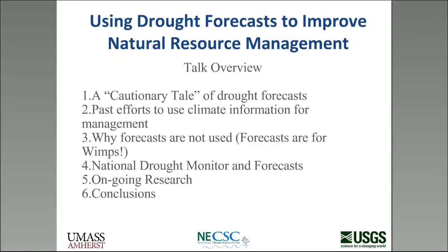Here's an overview of the remainder of my talk. I'm going to present a series of papers — some pretty old — and give an example of a cautionary tale about how drought forecasts were used and perhaps misused. I'll look at past efforts to use climate information to improve management, examine the paper called 'Forecasts Are for WIMPs' about why forecasts aren't used, then look at the National Drought Monitor and Forecasts, and suggest the use of virtual droughts in natural resource management.